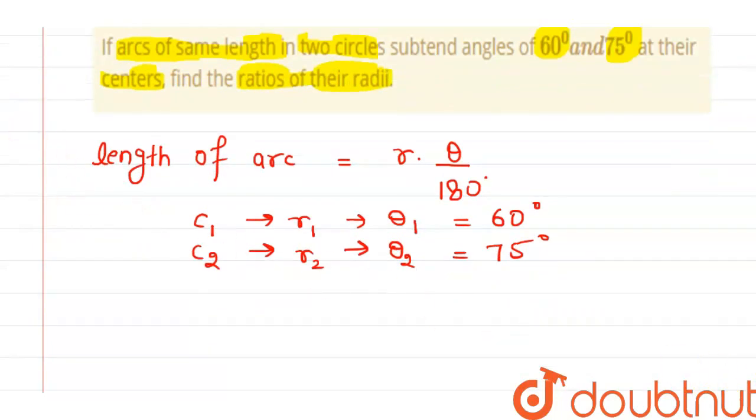And we are given that length of arcs are equal, so L1 is equals to L2.